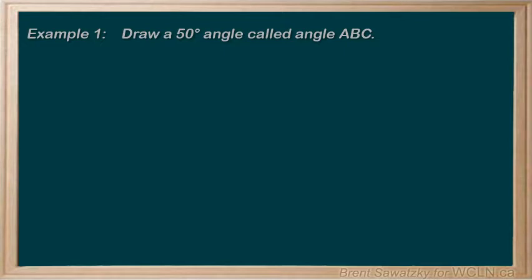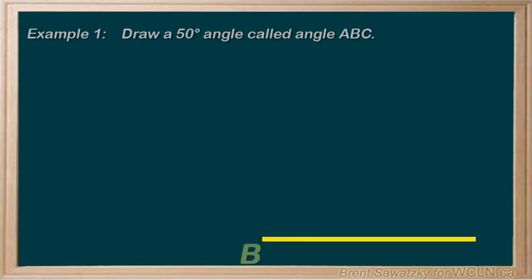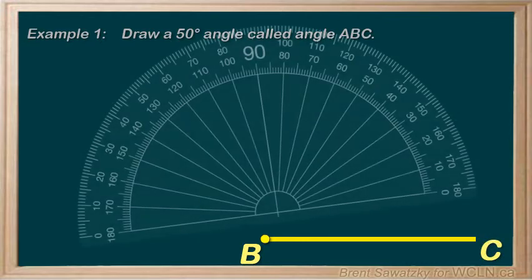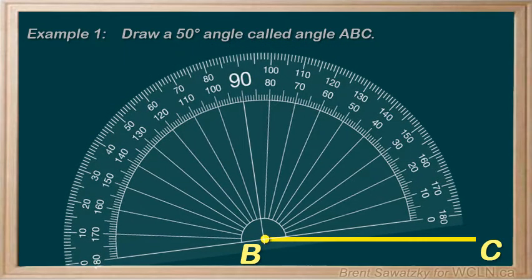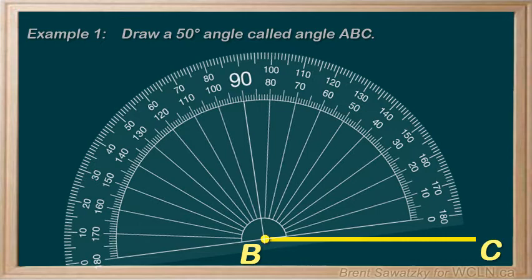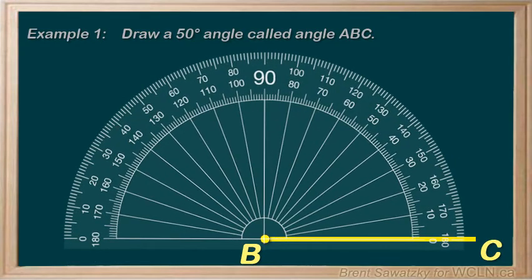Example 1: Draw a 50 degree angle called angle ABC. We need a reference line for our angle, and we can use the bottom of our protractor as a straight edge to make this line. Now let's label our line. Let's mark the vertex B with a clear dot on the end of the line here, and at some other point on the line, we can mark A or C.